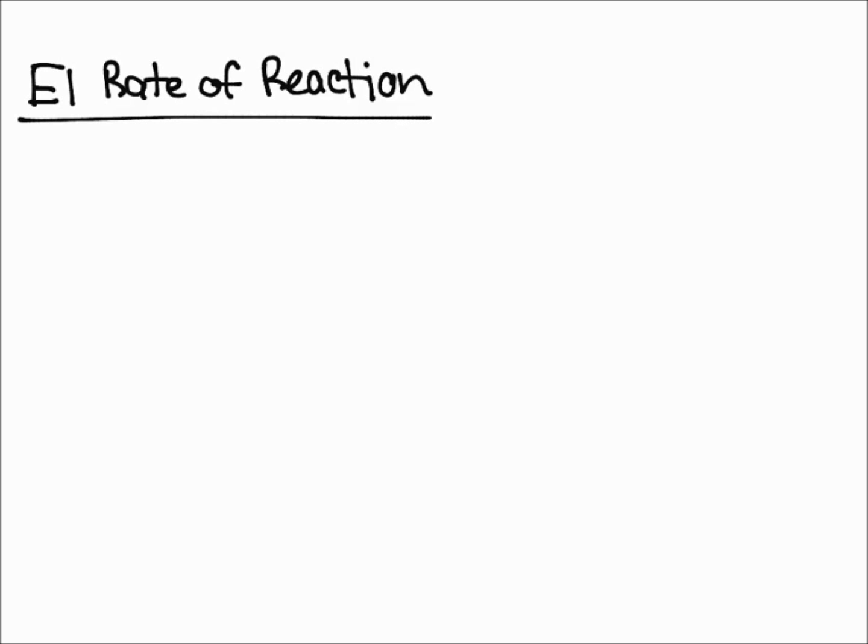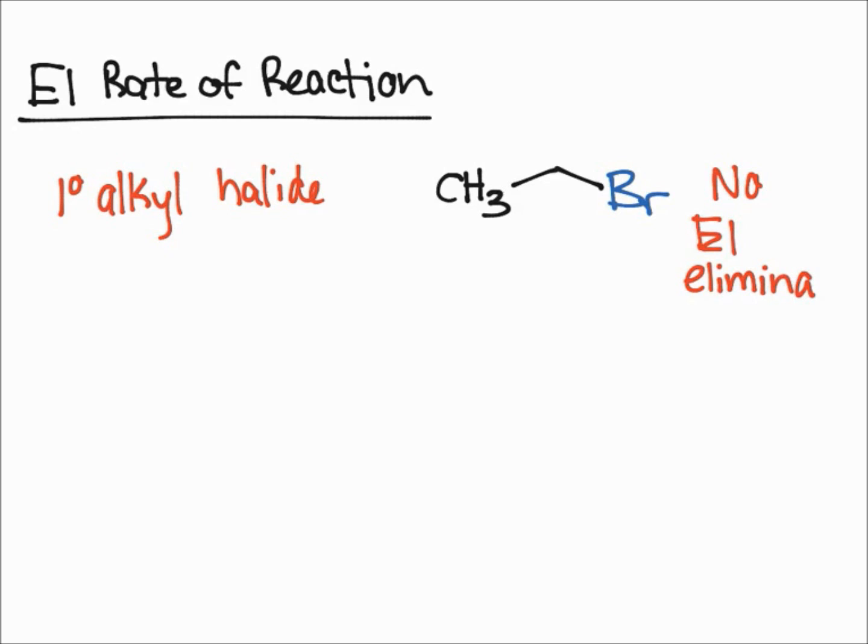First let's look at the primary alkyl halide. For a primary alkyl halide there's actually going to be no E1 elimination, and this if you recall is due to the E1 mechanism where the bromine essentially is just going to leave.